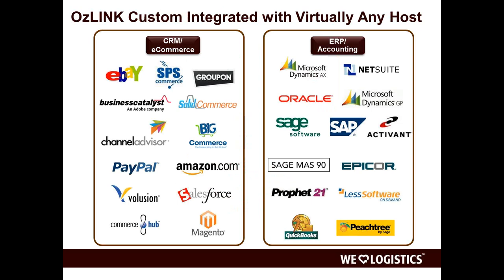This represents the hosts we've integrated with. On the right are traditional ERP and accounting hosts — from QuickBooks and Peachtree for smaller companies, to Sage and NetSuite for mid-size, up to Oracle and SAP for enterprise. On the left, we see growth in e-commerce. Magento and Volusion are popular shopping carts. People selling through marketplaces may pull orders from eBay, Amazon, or Channel Advisor.